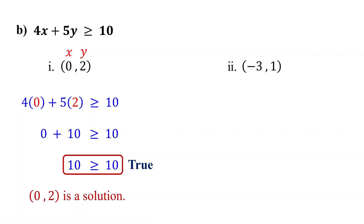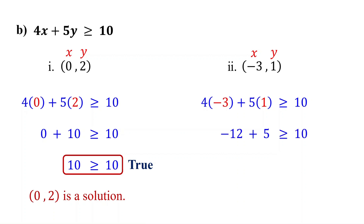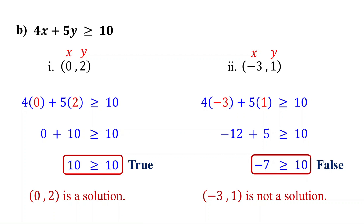For the ordered pair (−3, 1), substitute negative 3 for x and 1 for y, then simplify. 4 times negative 3 is negative 12, and 5 times 1 is 5. Negative 12 plus 5 is negative 7. This is false because negative 7 is not greater than or equal to 10. So the ordered pair (−3, 1) is not a solution to the inequality.